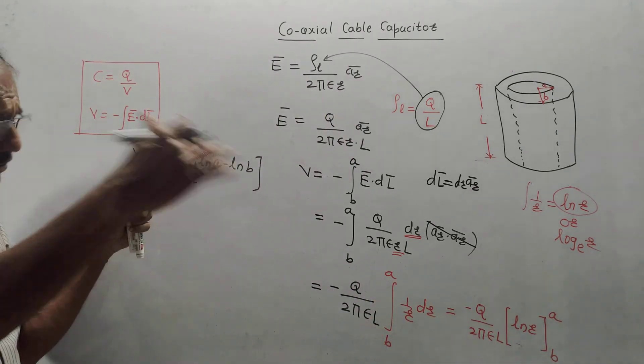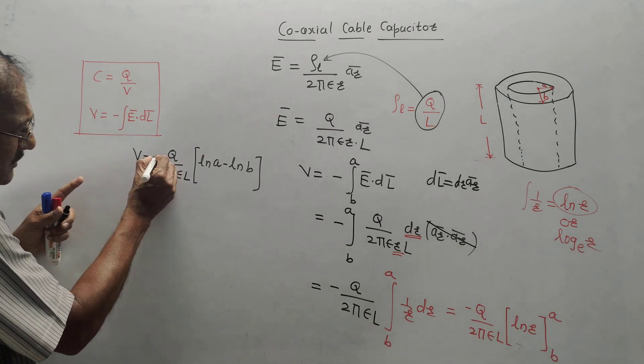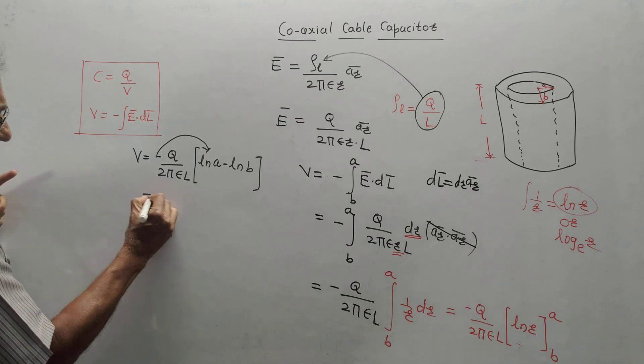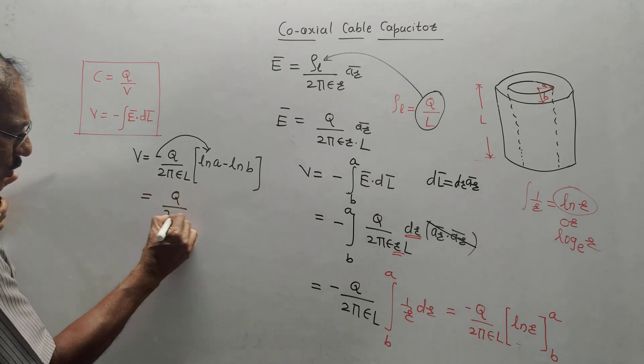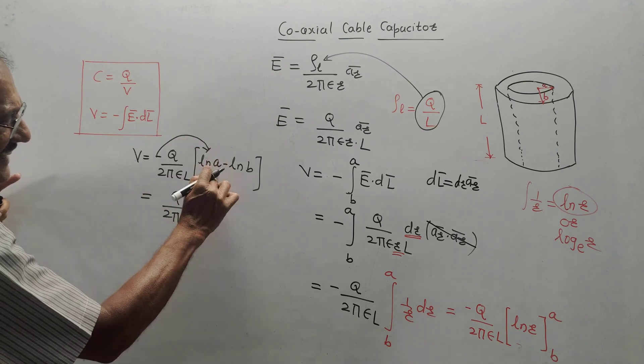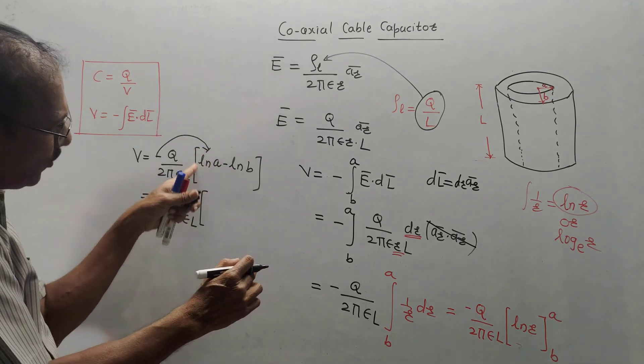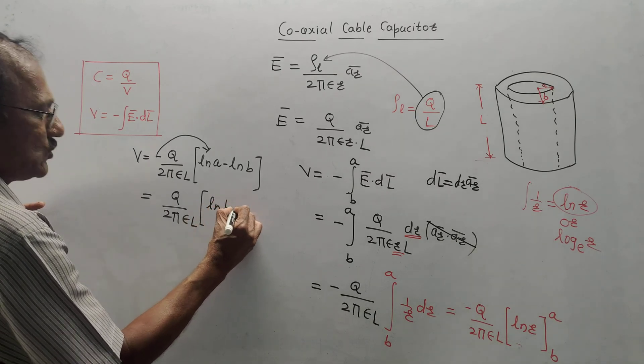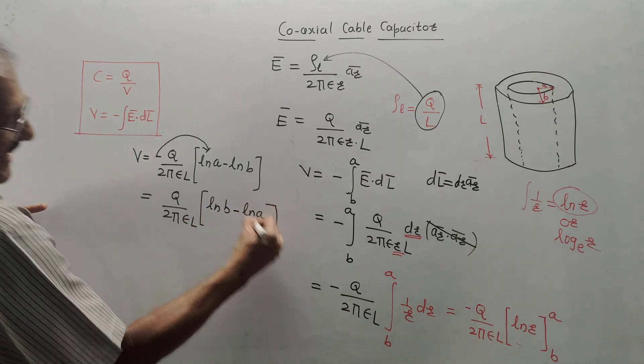Now, just for simplification, if you absorb this minus sign inside the bracket, then equation becomes Q by 2 pi epsilon L and transferring minus sign inside the bracket. So, first term becomes negative, second term becomes positive. I will write positive term first. So, it is L N B minus L N A.